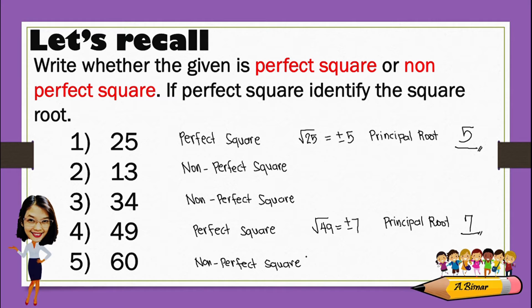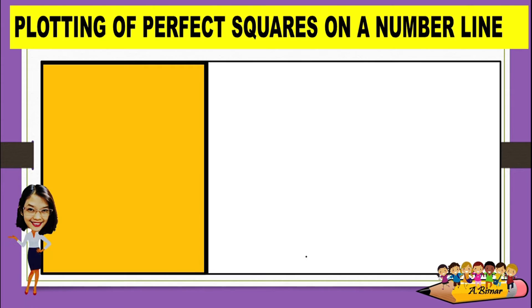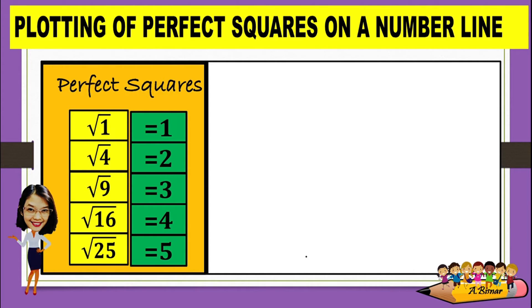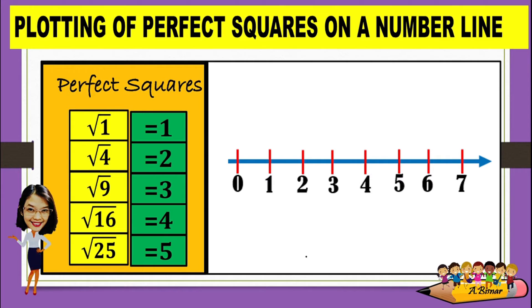Moving on to our real lesson. Since we already know the difference between perfect squares and non-perfect squares, let us try to plot these perfect squares. So we must draw a number line. Since we are just going to plot the principal root, the number line that we have has positive numbers only.